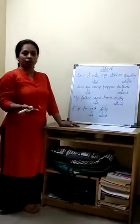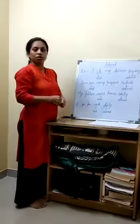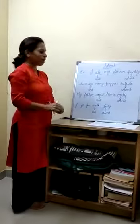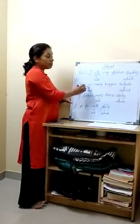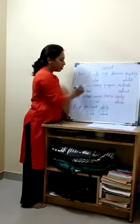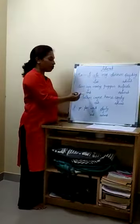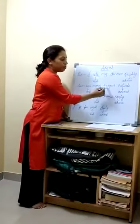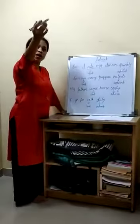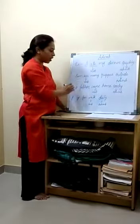Next example: Sam sees many puppies outside. 'Sees' is a verb — see is also a doing verb. Where did he see? Outside. So 'outside' is adverb and 'sees' is verb.